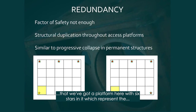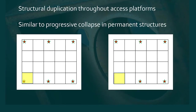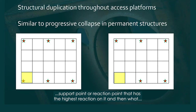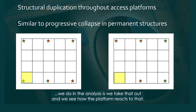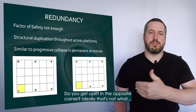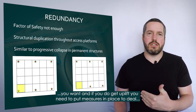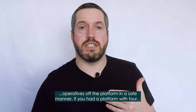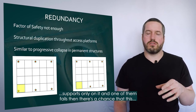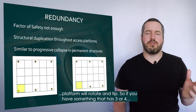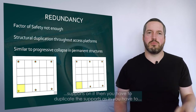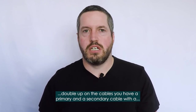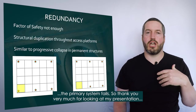The image here shows a platform with six stars representing its support points. You do an analysis to find the support point with the highest reaction on it, then take that out to see how the platform reacts — do you get uplift in the opposite corner? Ideally that's not what you want, and if you do get uplift you need measures to deal with it, but it's still a scenario where you can get operatives off the platform safely. If you had a platform with only four supports and one failed, there's a chance it would rotate and tip. So if you have three or four supports, you must duplicate them — a primary and secondary cable with a safety system on the secondary cable that stops the platform from falling if the primary system fails.